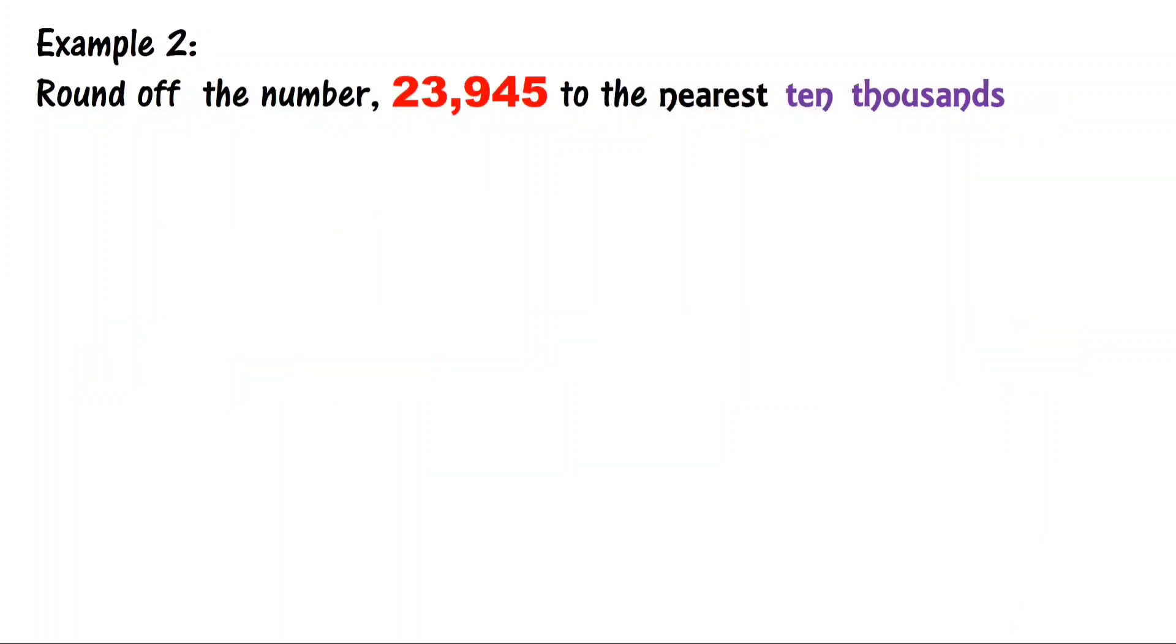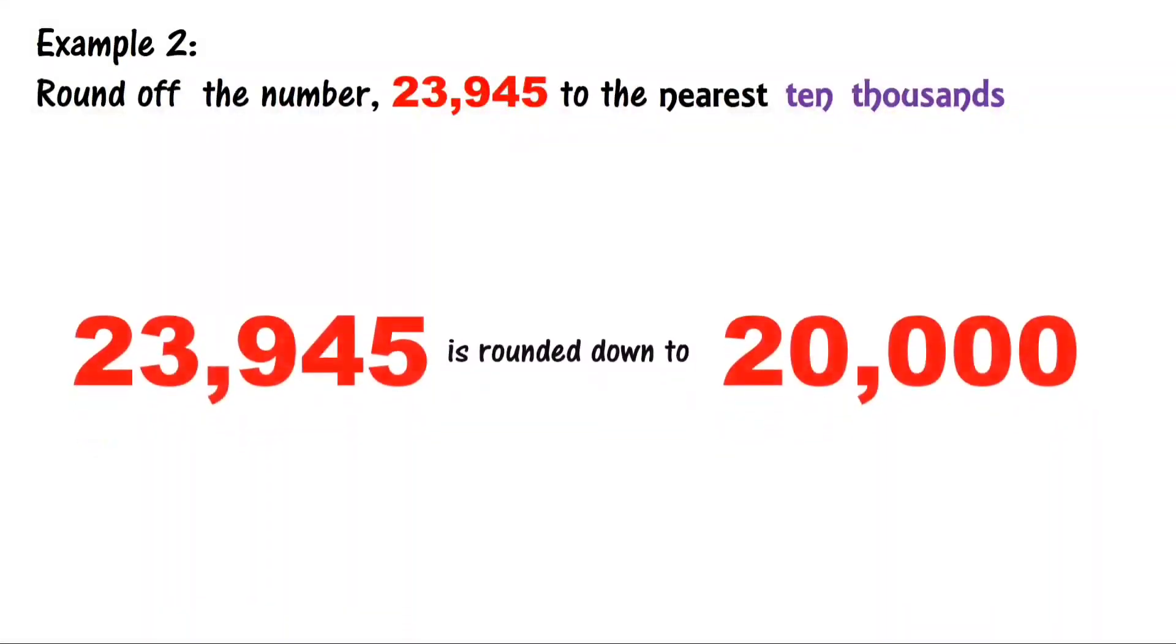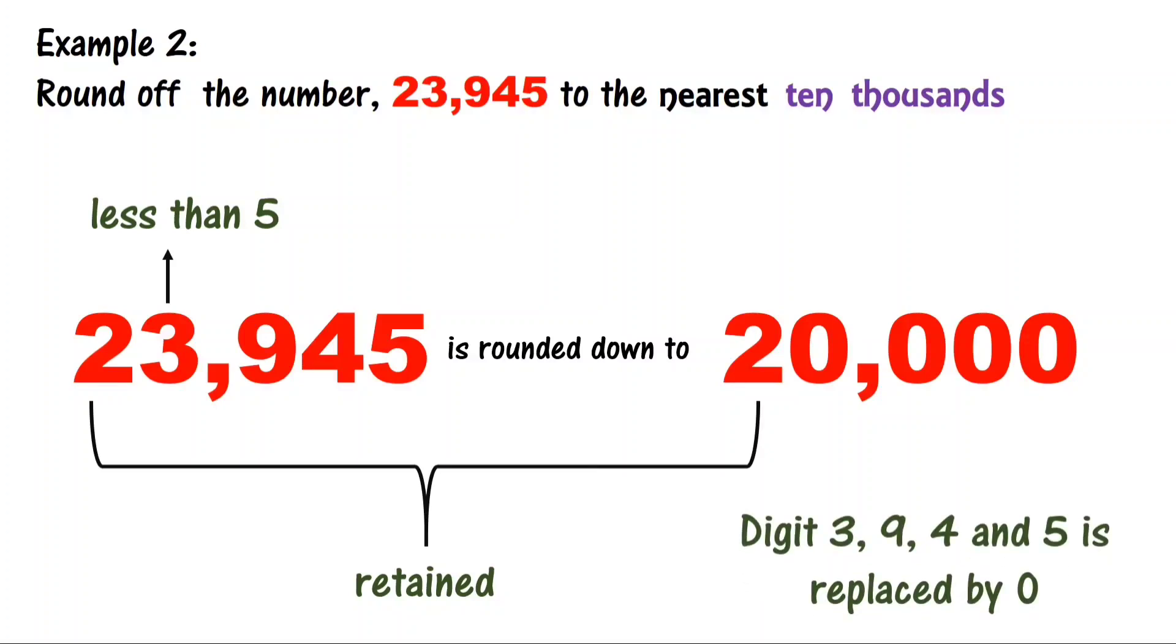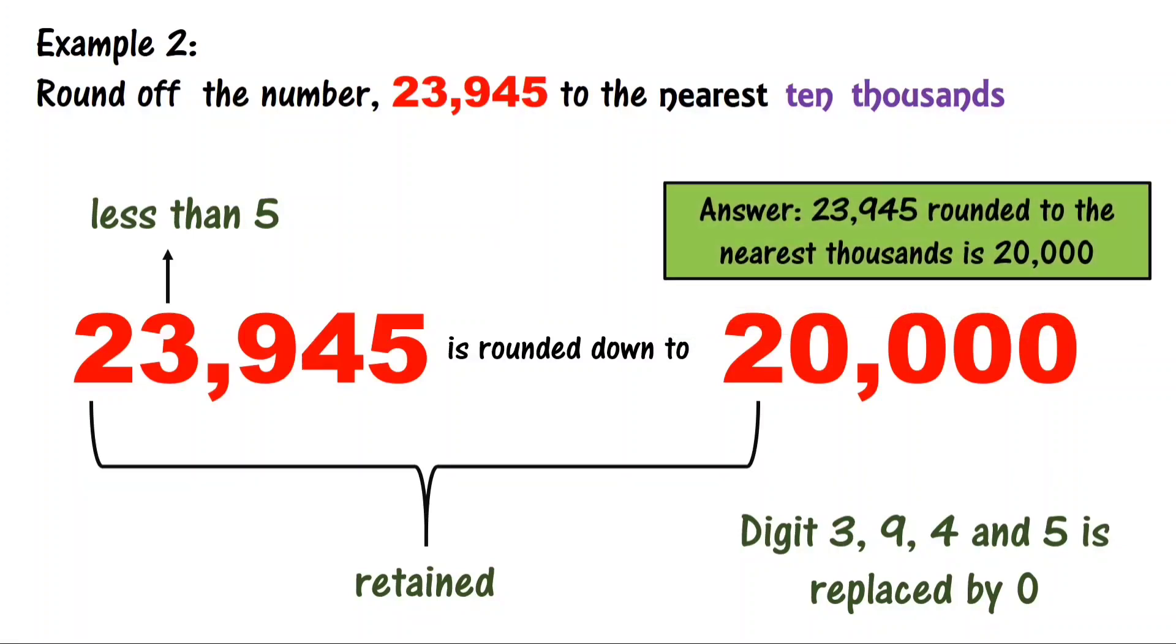Example number 2: Round off the number 23,945 to the nearest ten thousands. 23,945 is rounded down to 20,000. The place value of 2 is 10,000 and the place value of 3 is 1,000. 3 is less than 5, that's why 2 will retain as is. The digits 3, 9, 4, and 5 are replaced by 0. So, 23,945 rounded to the nearest ten thousand is 20,000.